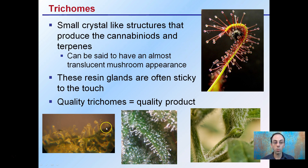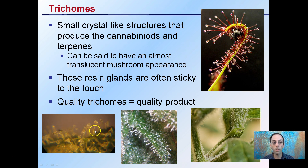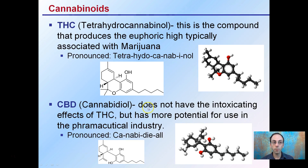Typically for cannabis, we're looking at trichome production under a microscope or a loupe to magnify them, because quality trichomes typically directly correlate to a quality product.